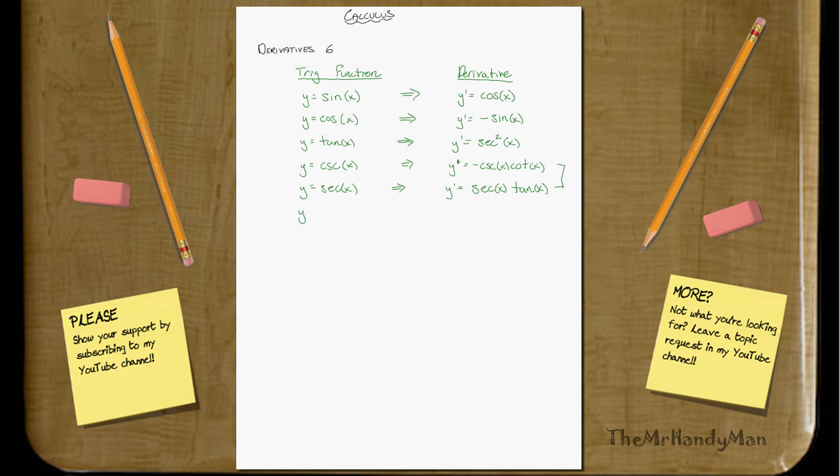And then finally, y equals cotangent of x. That results in negative cosecant squared of x.